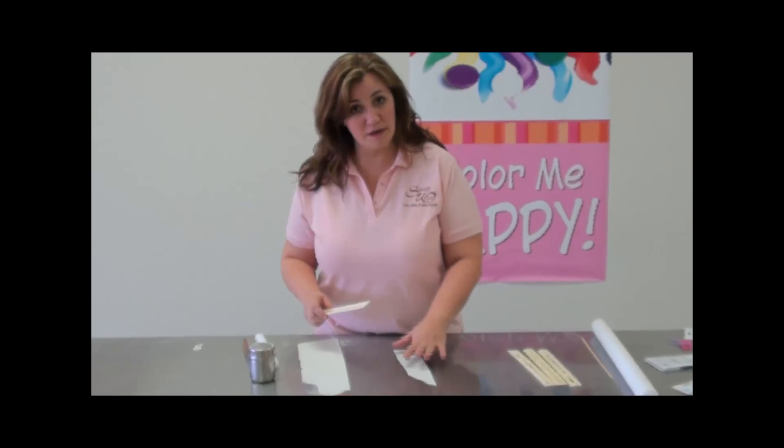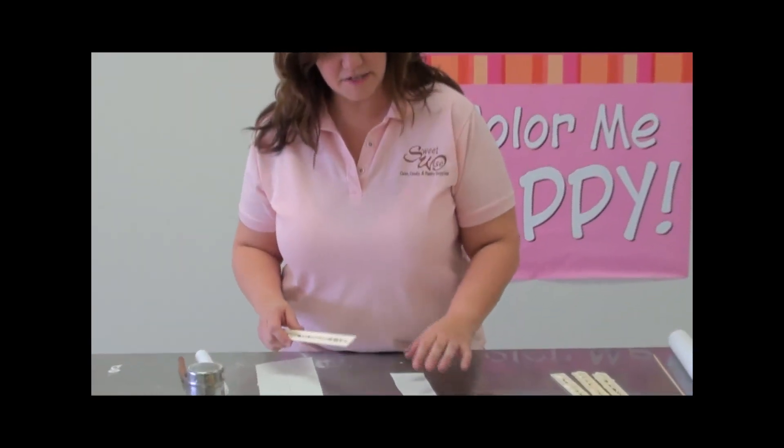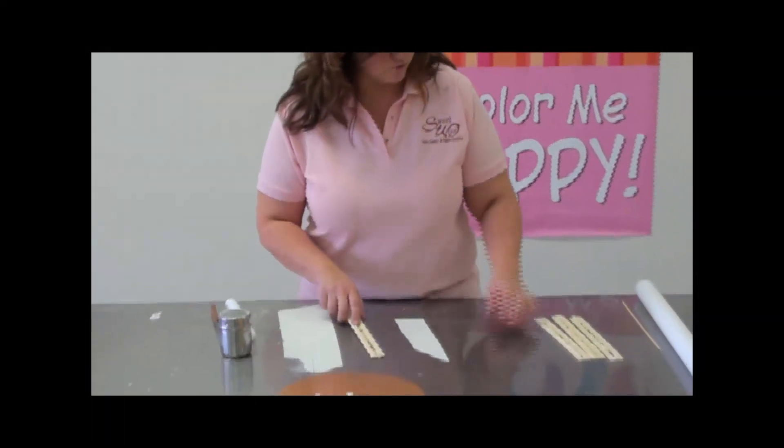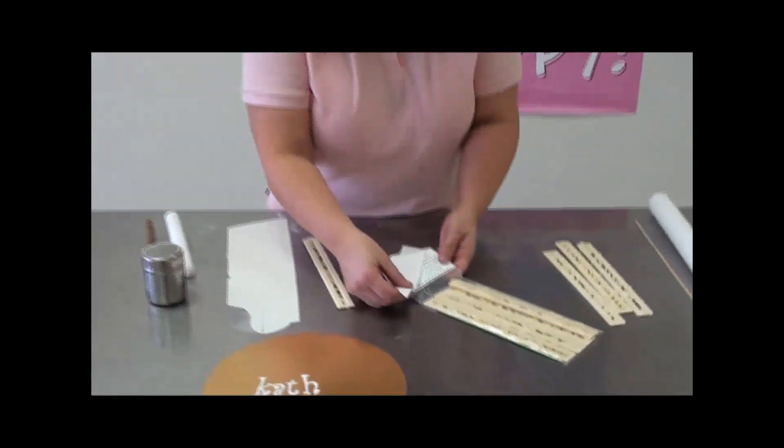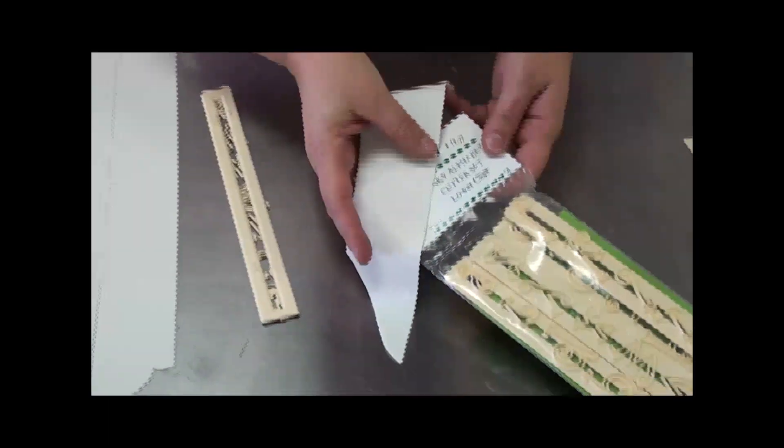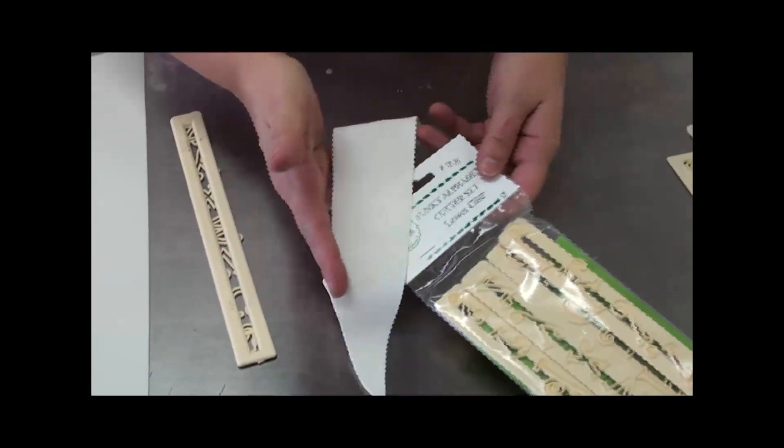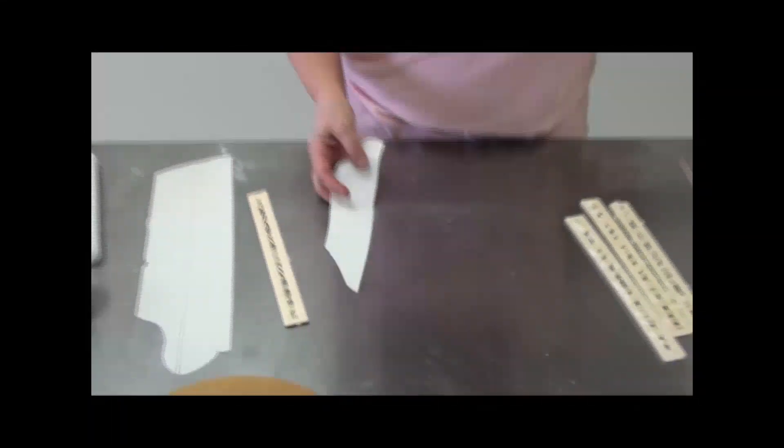First thing is you're going to use gum paste, not fondant, so I've added plenty of Tylose to it so that it's nice and dry. I've rolled it out really thin and you want it thin enough that you can actually read through it. You can look through there and see the different colors in the writing and the print behind there. That's how thin you want it.